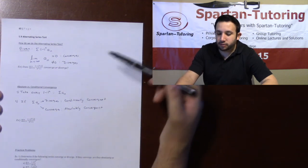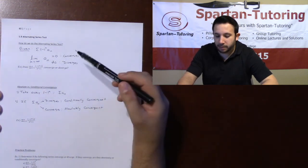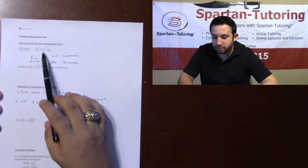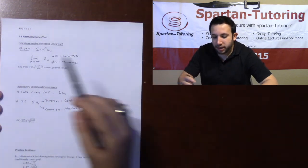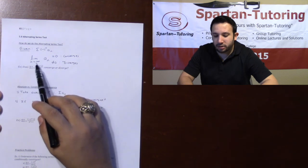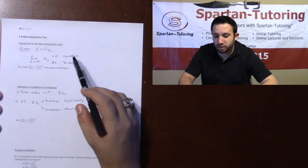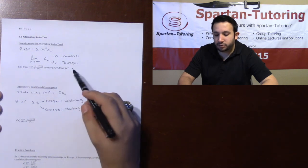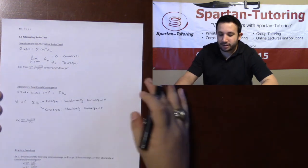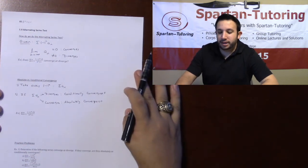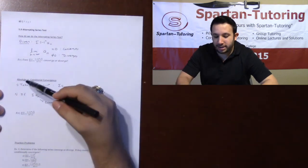You know to use the alternating series test when your series is alternating. Your series will have negative one to the n times some a_n. All you need to do is take the limit as n goes to infinity of a_n — if it goes to zero, it converges; if it doesn't equal zero, it diverges. That's it.